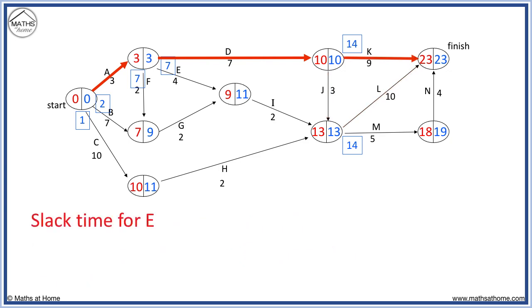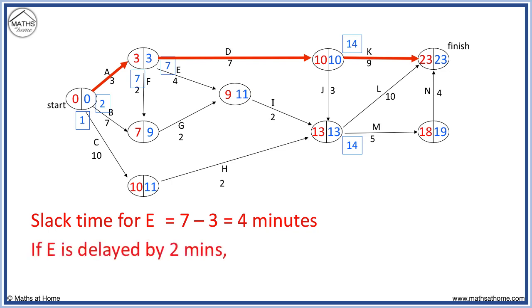The slack time for E is 7 minus 3 equals 4. This time we used the 7 on the outside of the node. If there is a number on the outside of the node, we use this. If E is delayed by 2 minutes, the project is not delayed because we have up to 4 minutes of slack time.